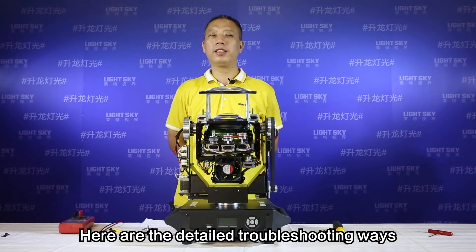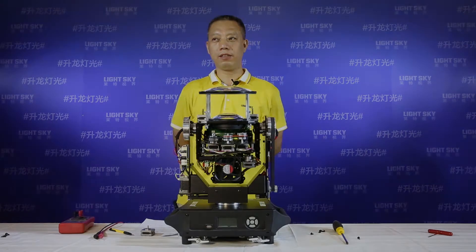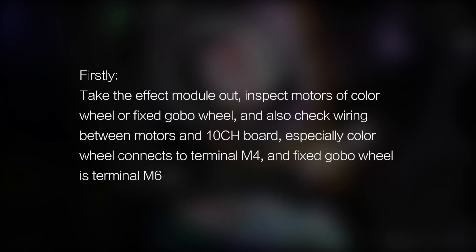Here are the detailed troubleshooting ways. Firstly, take the effect module out. Inspect motors of color view or fixed global view, and also check wiring between motors and the 10-channel board. Especially, color view connects to terminal M4, and fixed global view is terminal M6.